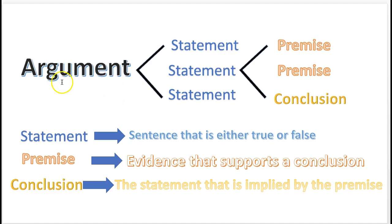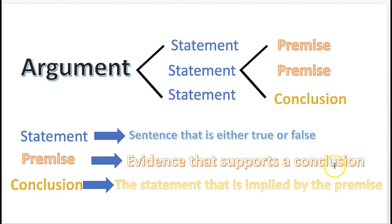So we've learned already what an argument is. An argument is a group of statements with the intention to prove something — it consists of premise and conclusion. A statement is a sentence that is either true or false. For example, 'This apple is red' is a statement; it's either true or false — it's a claim. A premise is evidence that supports a conclusion. A conclusion is the statement that is implied by the premise. So an argument is a group of statements that can be separated into premise and conclusion.